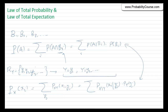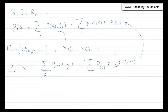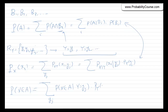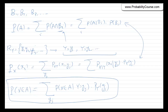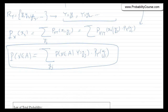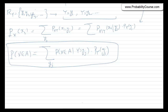More generally, if you want to find the probability that X belongs to set A, you can write it as a summation of conditional probabilities: P(X ∈ A | Y = yj) * P(Y = yj). This is just another way of writing the law of total probability. The interesting extension here is that we can extend the law of total probability to expectations, which we call the law of total expectation.